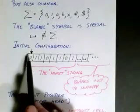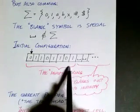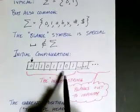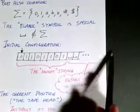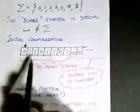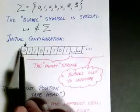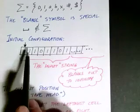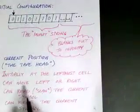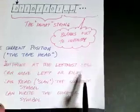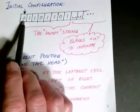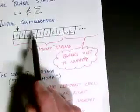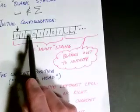The blank symbol is special: our input is initially on the tape and is the only thing on the tape, and the blank symbol is not in the alphabet — the input string does not contain any blanks. The blank is the special symbol used to fill the infinite tape. In our initial configuration, before computation starts, we have our input string on the tape and the tape head is positioned at the very left end.